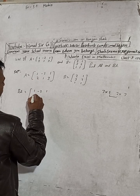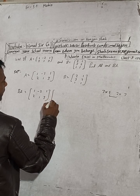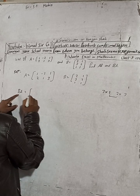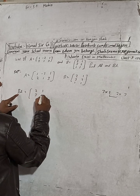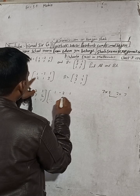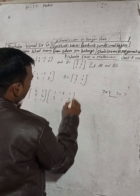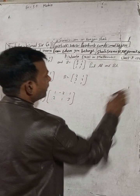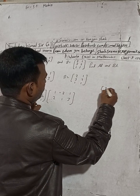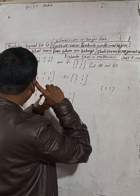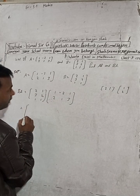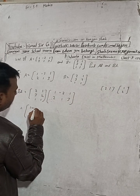Let me write B first: [2, 1; 3, 2; 1, 1] and A: [1, -2, 1; 2, 1, 3]. For the first element of BA, I take the first row of B: 2, 1 and the first column of A: 1, 2. So: 2×1 + 1×2.